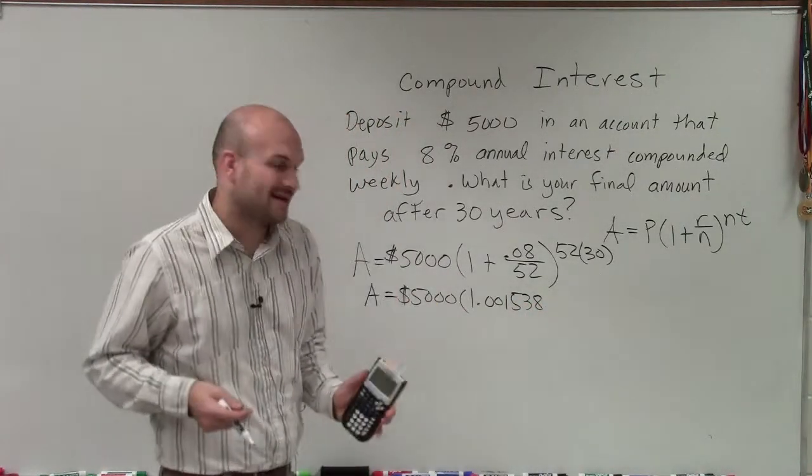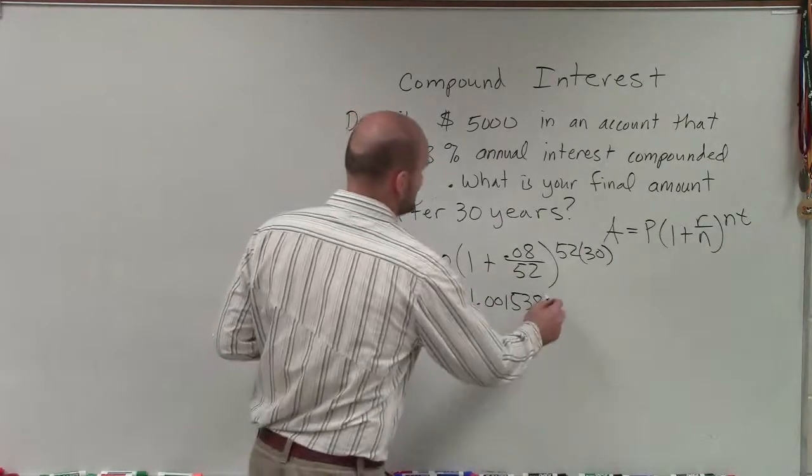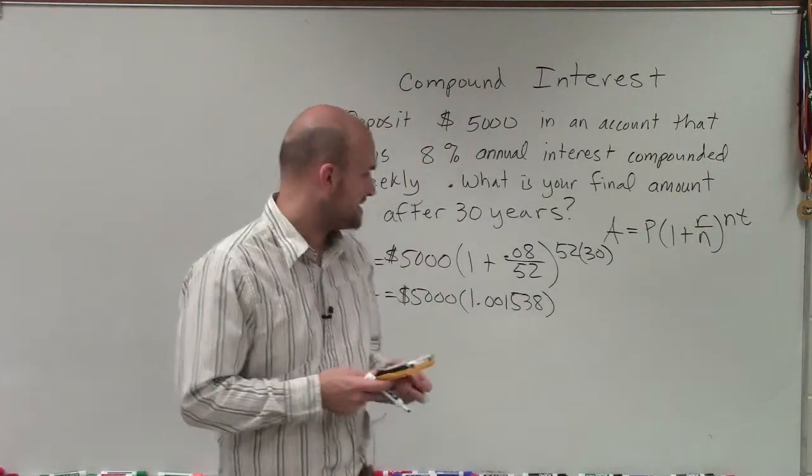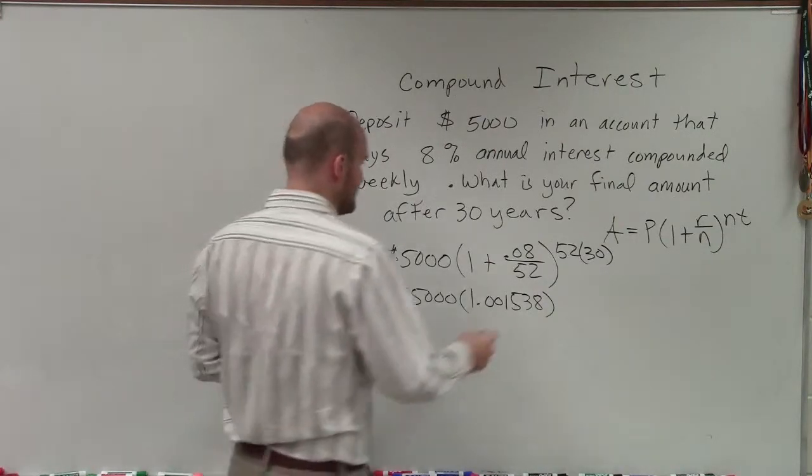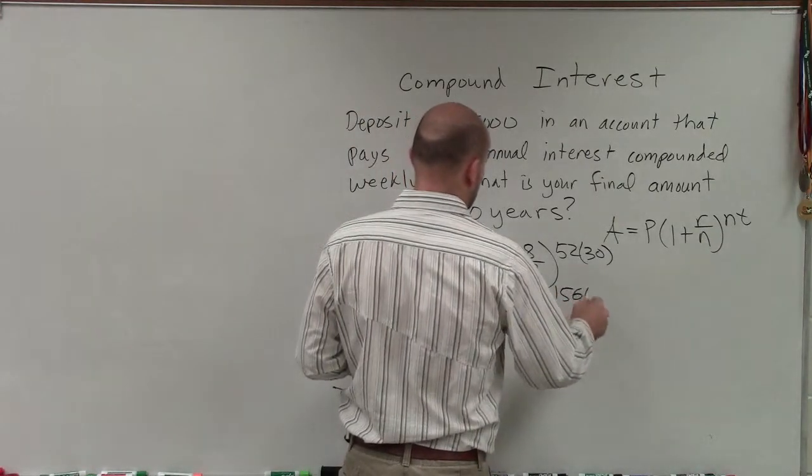Now, I'm just going to keep everything in my calculator. But I'm writing these down so you guys can just kind of see what exactly everything is going to be. So I could also do 52 times 30, which is 1,560.